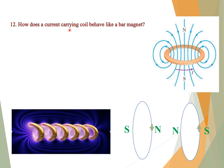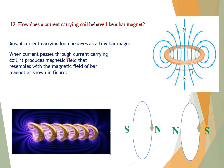Question number twelve: How does a current-carrying coil behave like a bar magnet? Answer: A current-carrying loop behaves as a tiny bar magnet. When current passes through the coil, it produces a magnetic field that resembles the magnetic field of a bar magnet. So this current-carrying loop has its own magnetic field around it which resembles that of a bar magnet.